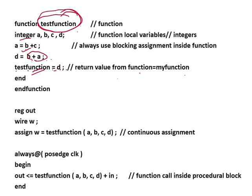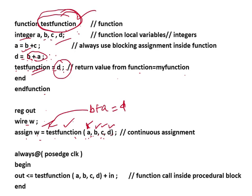It returns the value of d — and what is d? d = b + a. The return value goes to 'test_function'. Then 'assign w = test_function(a, b, c, d)' — this is a function call. We have four arguments: a, b, c, d, matching the four integer variables declared inside the function. Whatever is returned by test_function — which is d, the value of b plus a — is assigned to w.